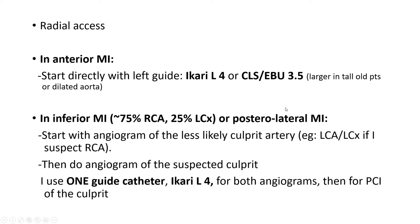How do I approach inferior MI and posterolateral MI? In inferior MI, the culprit is the RCA 75% of the time and the left circumflex 25% of the time — meaning you don't need a dominant left circumflex for it to cause inferior MI. An infarct involving a low obtuse marginal branch can give inferior ST elevation even if the PDA is not involved. Unlike anterior MI, in those cases I try to do a full angiogram before I perform PCI of the culprit. I start with the angiogram of the less likely culprit artery — for example, if I suspect RCA culprit, I start with an angiogram of the left coronary artery and left circumflex, then go with a guiding catheter for the RCA.